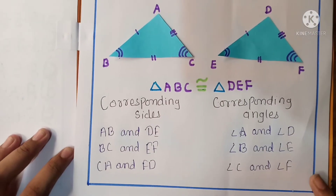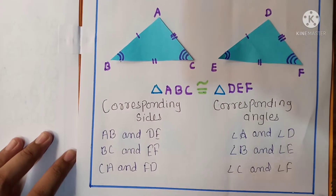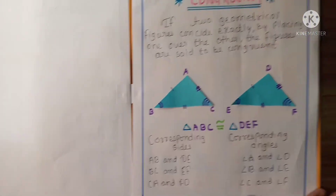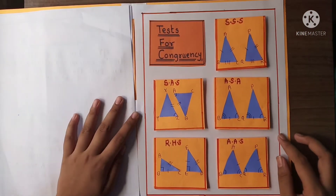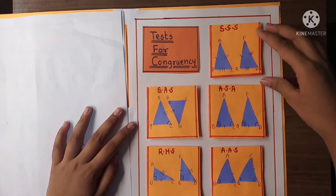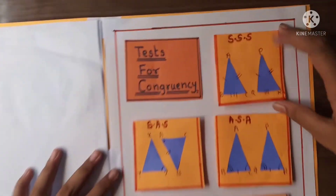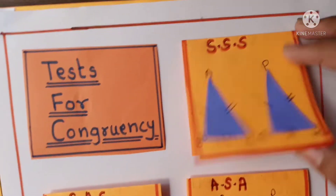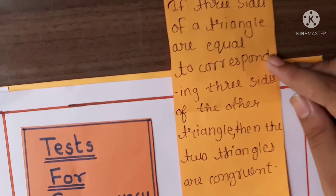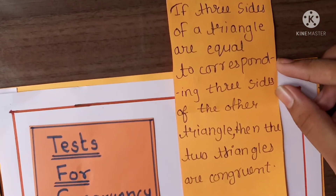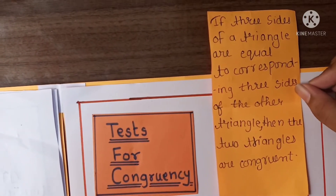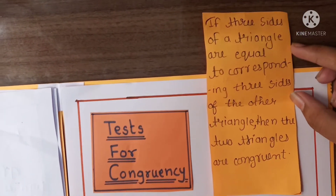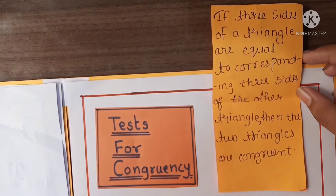Here is the first test for congruency: Side-Side-Side. Here is the figure and the information. If three sides of a triangle are equal to the corresponding three sides of another triangle, then the triangles are congruent.